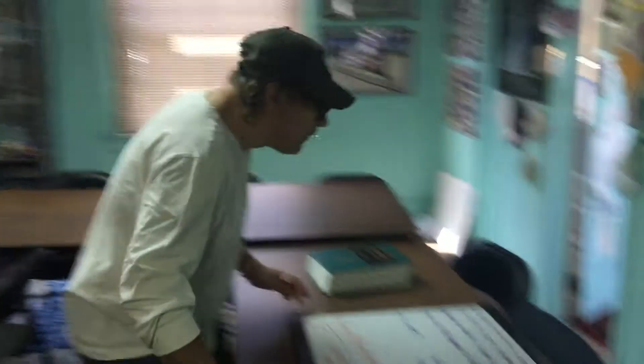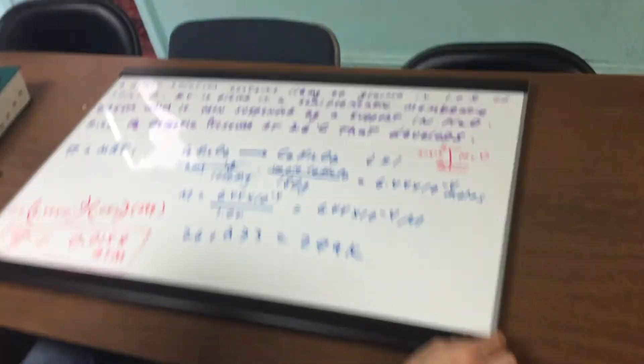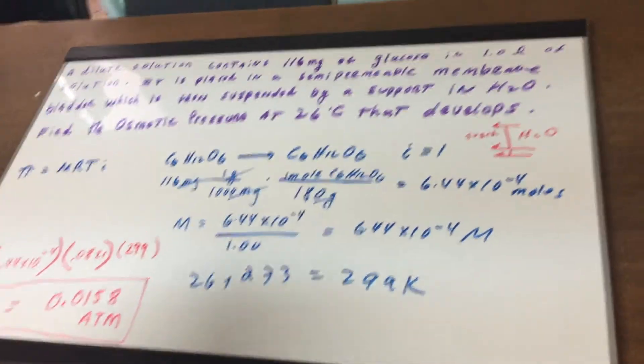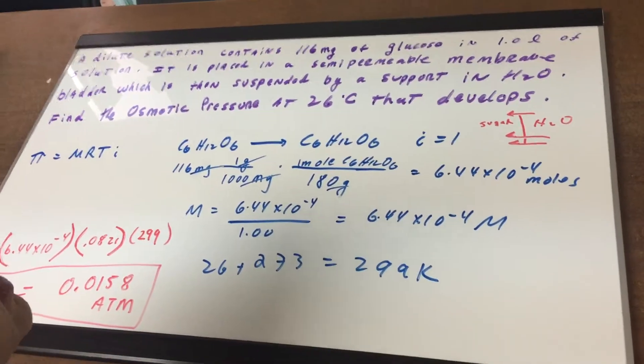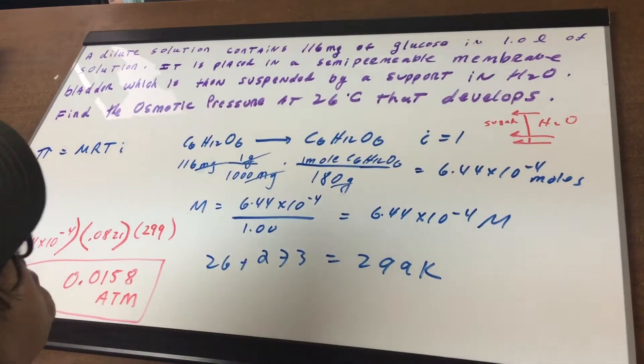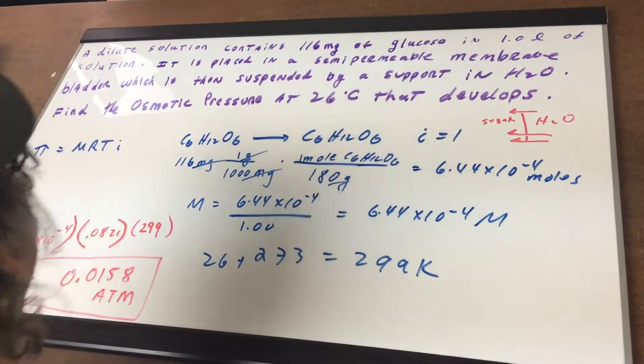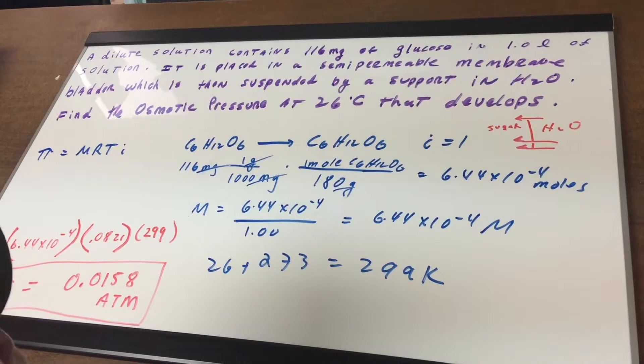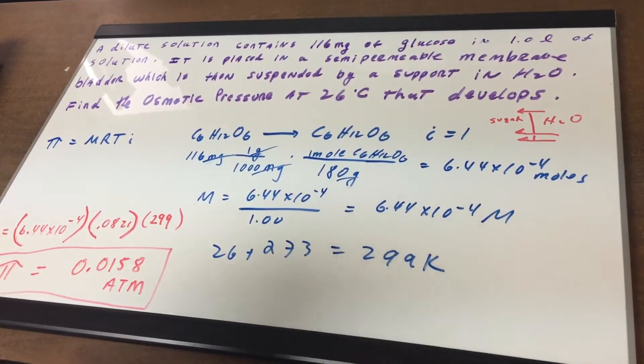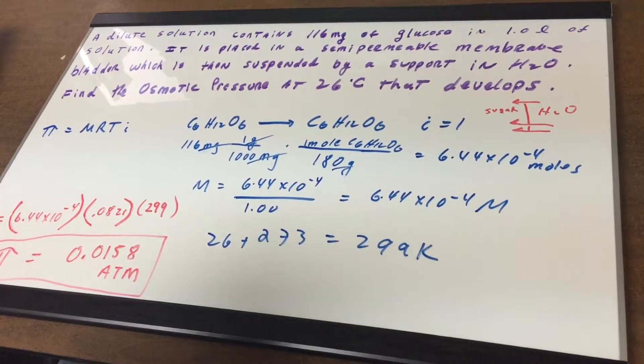Come on around and let's have a quick look. We have a dilute solution containing 116 milligrams of glucose in a one liter solution, and it is placed in a semi-permeable membrane bladder which is then suspended by a support in water, and I want to find the osmotic pressure at 26 degrees Celsius that develops.